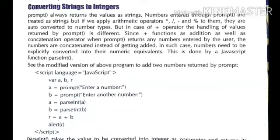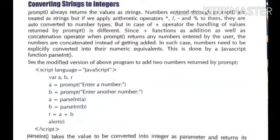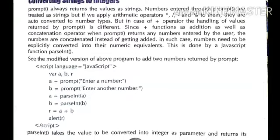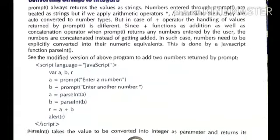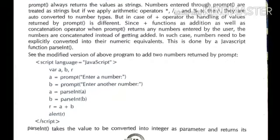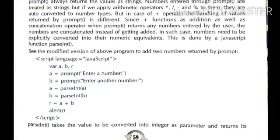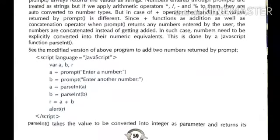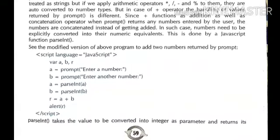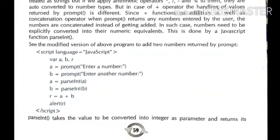parseInt takes the value to be converted into integer as a parameter and returns its numeric equivalent. It converts string values to numeric, making them numeric type. Numbers returned by the prompt function as strings are converted into integers by the parseInt function. Now instead of concatenation, addition will occur and numbers will be added properly.